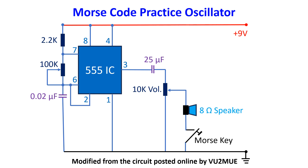An important use of oscillators for those preparing for amateur radio examination is the Morse code practice oscillator. Though earlier these were made with transistors, the trend now is to make them with a 555 timer IC, which is widely available and inexpensive. Here is a circuit diagram which I found posted online by VU2MUE, which I have redrawn in color with slight modifications.